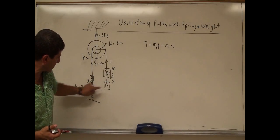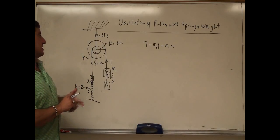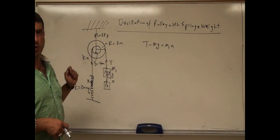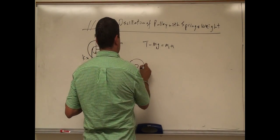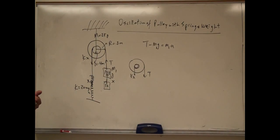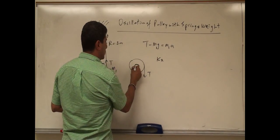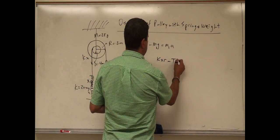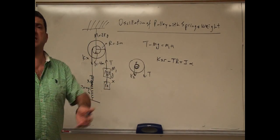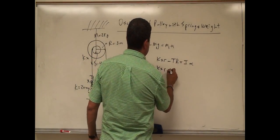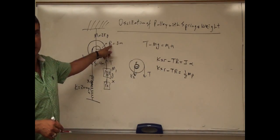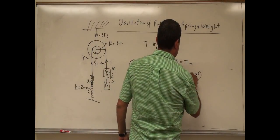Depending on how much the weight goes down x, that force kx determines the force on that side of the pulley. Now we analyze the torques on the pulley. The torque equation is kx times little r minus T times big R equals the moment of inertia times alpha. We assume the pulley is a solid cylinder, so the moment of inertia is one-half times mass of the pulley times big R squared times alpha.